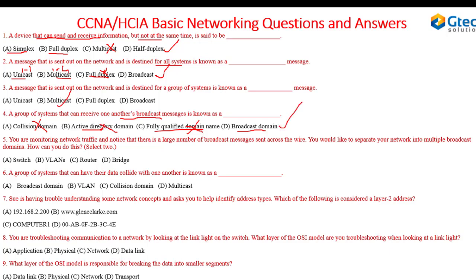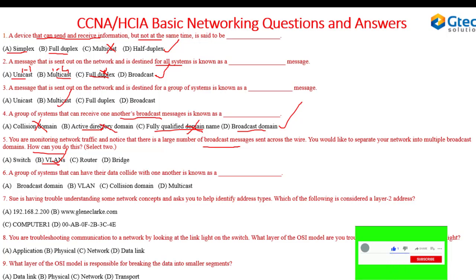Question five: when monitoring network traffic, you notice a large number of broadcast messages. You want to separate your network into multiple broadcast domains. There are two ways to do this: VLAN technology creates separate broadcast domains, and a router connects two or more different networks which are in separate broadcast domains. So the answer is VLAN and router.